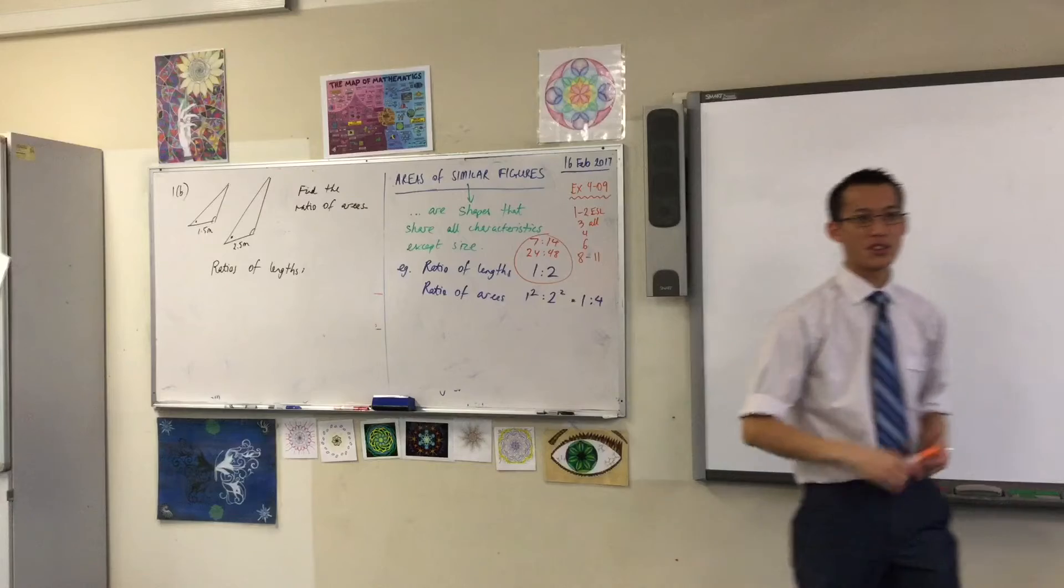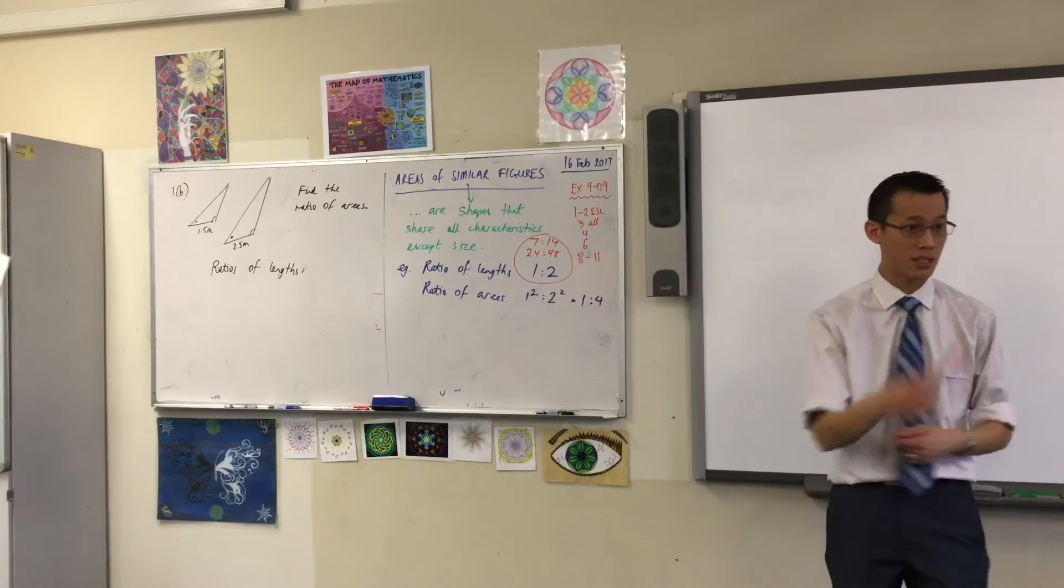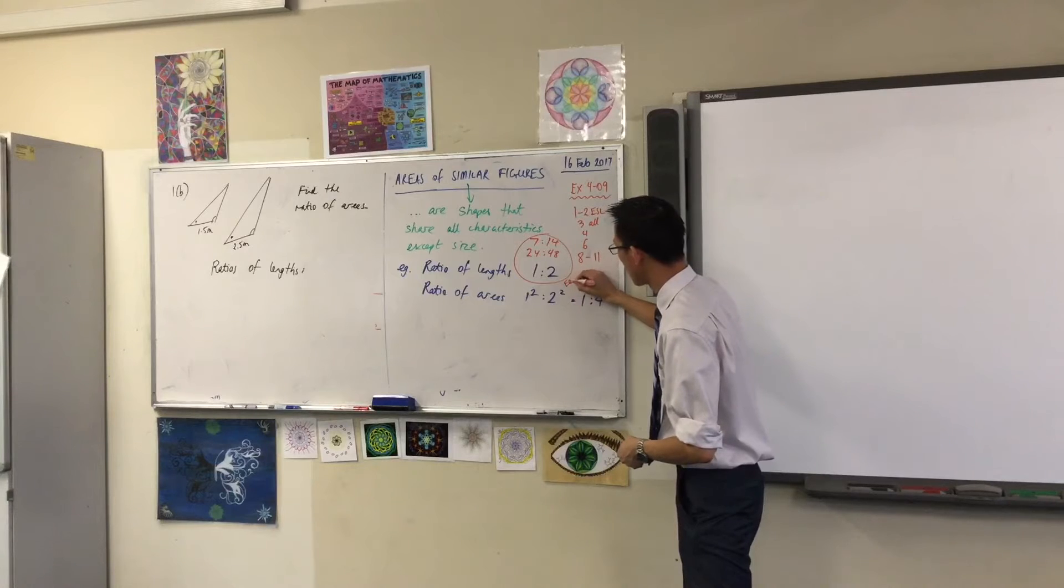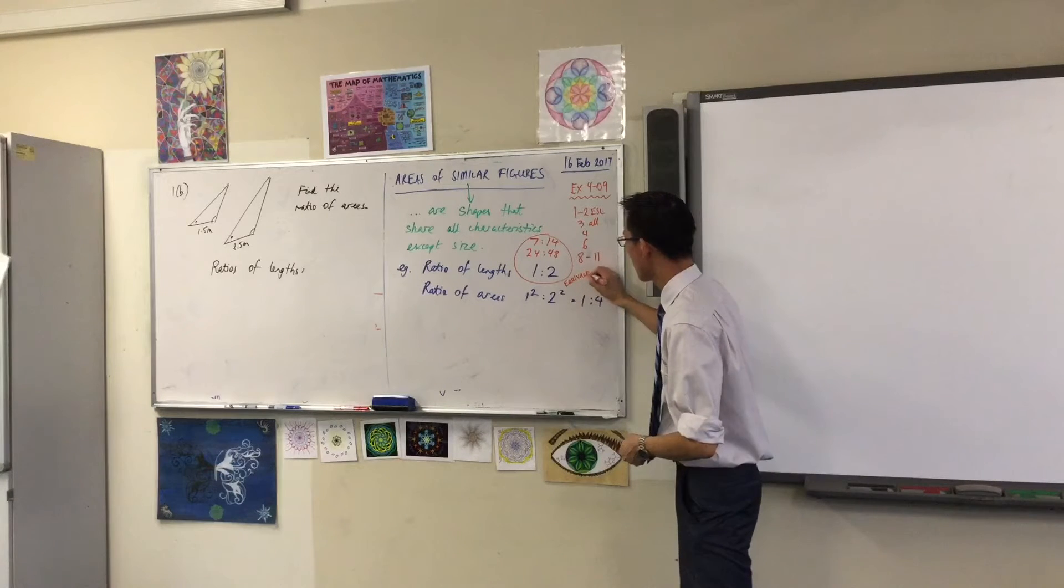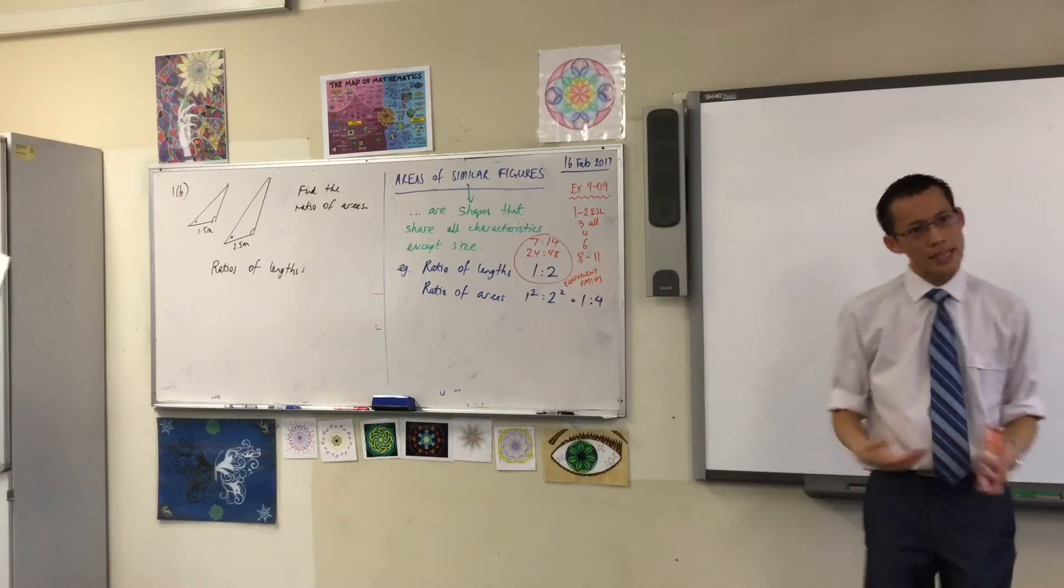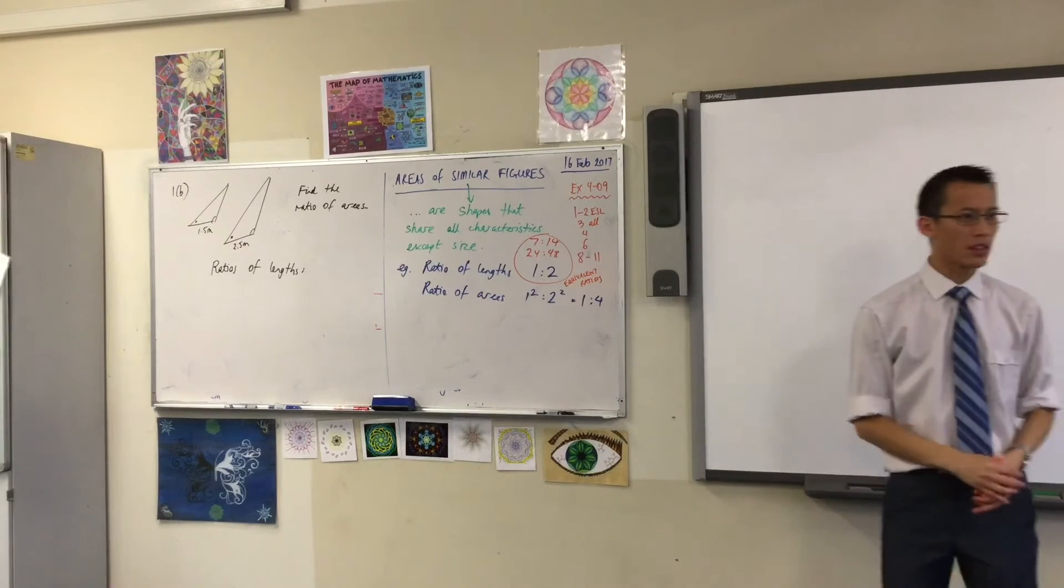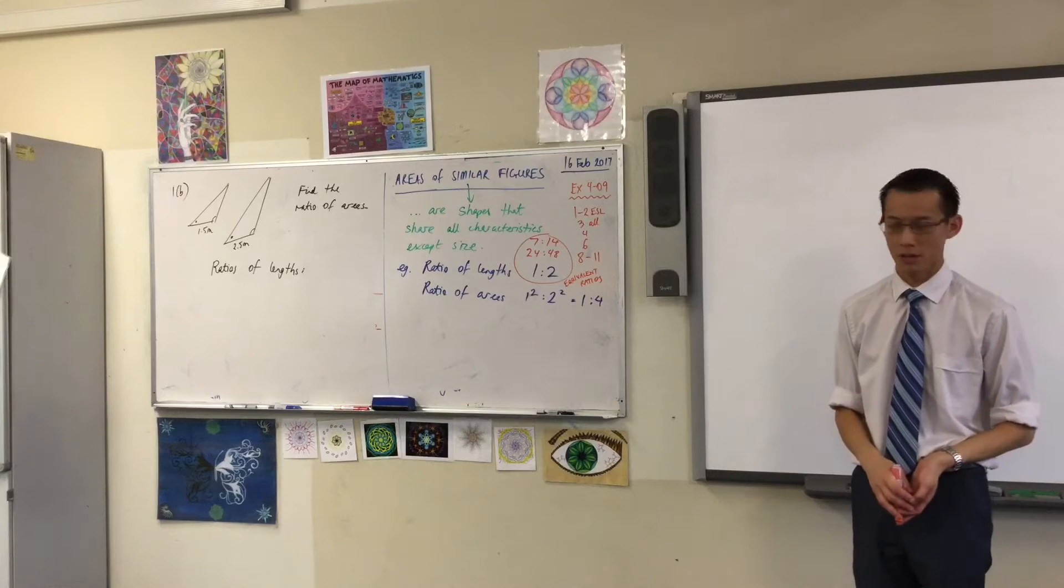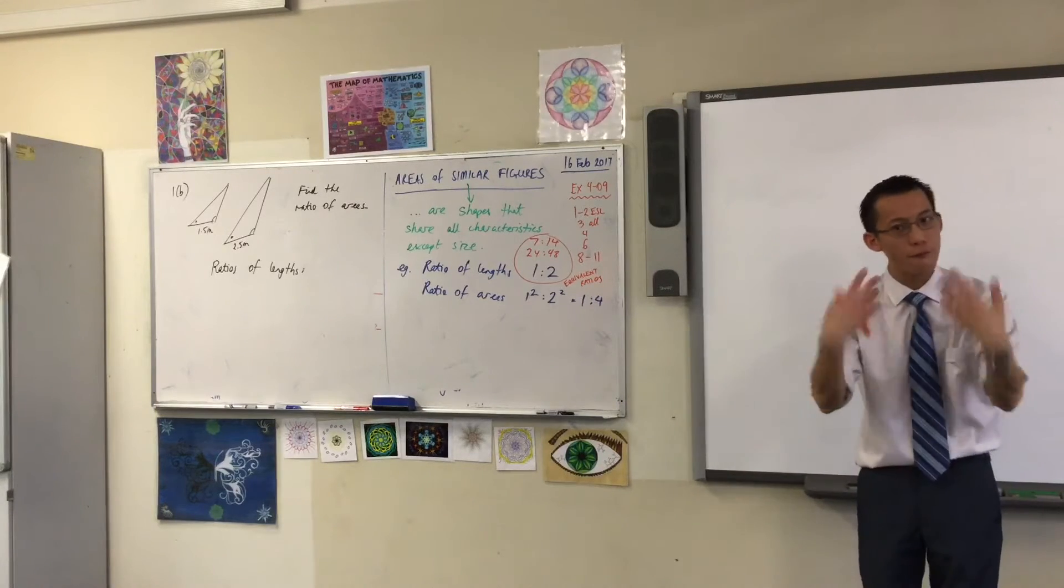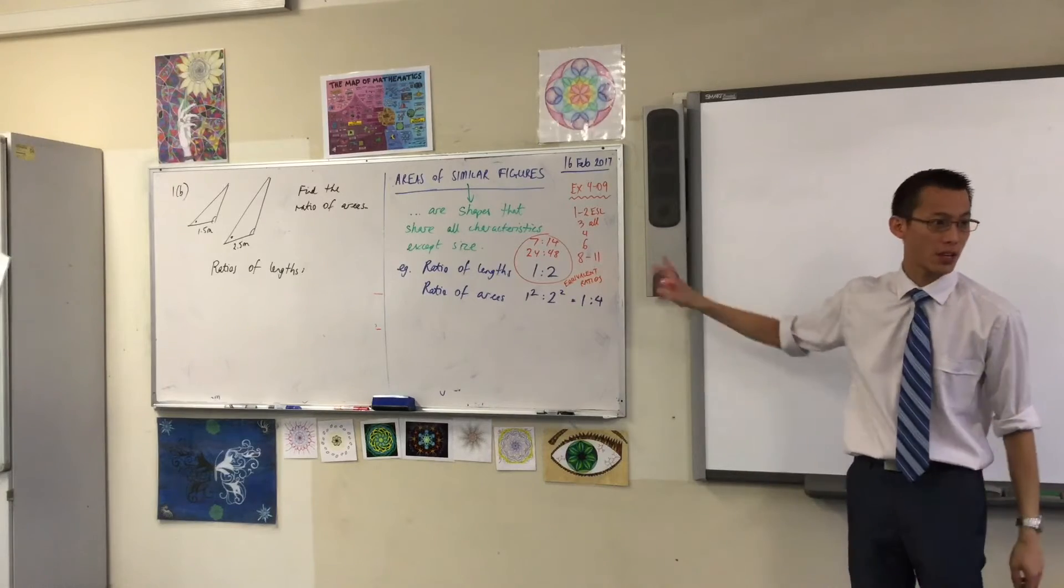These are what we call equivalent ratios. In fact, it might be helpful to you, if you still have another color, to actually write that. What these are called. Equivalent ratios. Do you notice that these equivalent ratios behave a lot like something else equivalent that you know, something we dealt with this morning, which is fractions. Equivalent fractions behave in just the same way.